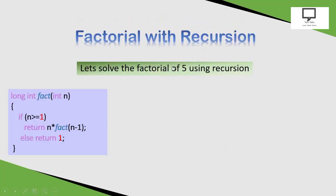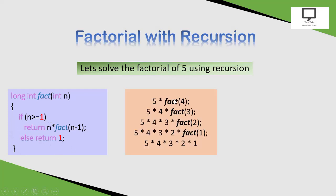Let's solve the factorial of 5 using recursion. This is the factorial function, which is called recursively when an integer number is passed to it. The condition is: if n is greater than or equal to 1, we return the current n multiplied by a recursive call with n minus 1. If the condition is false, it returns 1. The first time, 5 is passed to the factorial function and the condition is true, so 5 is multiplied by factorial of 4.